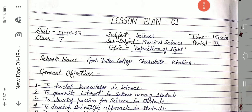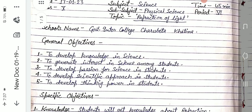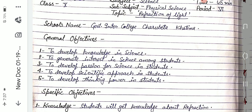Hello dear, today we are going to learn about a lesson plan which is related to physics, first date class. Subject: science, sub-subject: physical science, time: 45 minutes, period 6, topic: refraction of light, school name. General objectives — you can see there are five points related to general objectives.